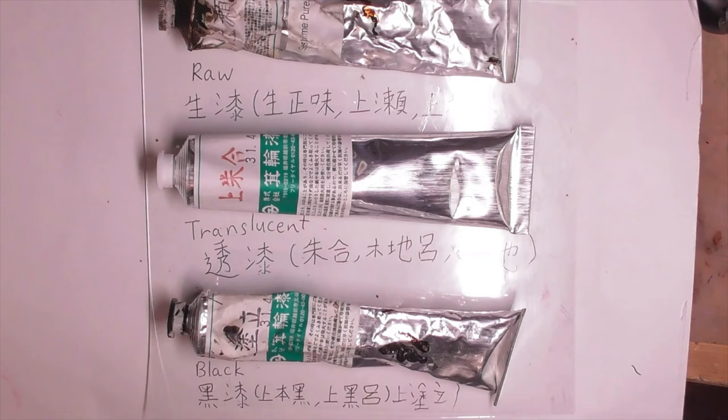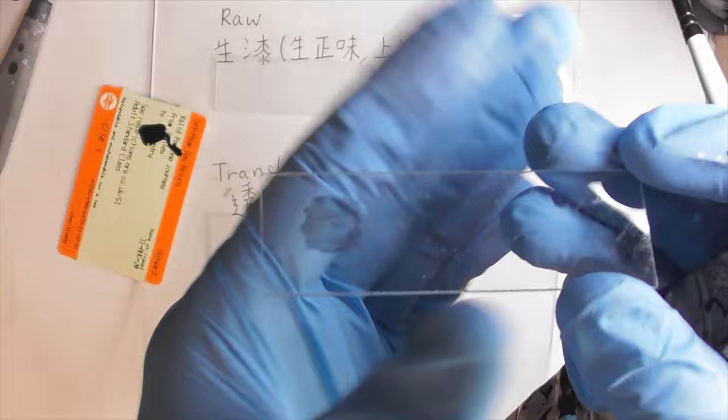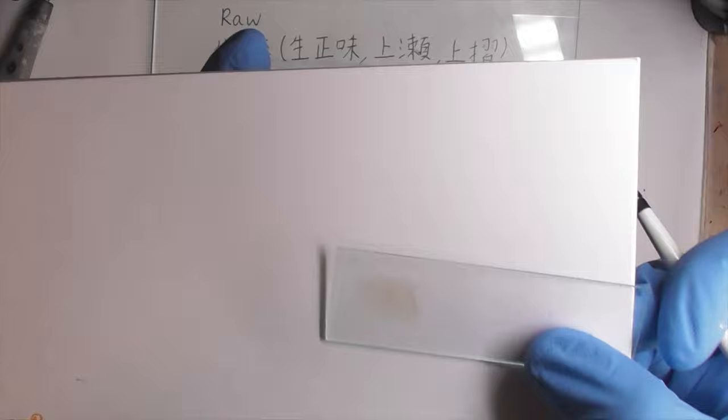There are three main types of Urushi: black, translucent, and raw. Black Urushi is produced by the reaction between Urushi and iron oxide. I'm showing the black Urushi on a piece of glass. Translucent Urushi is light brown in color.